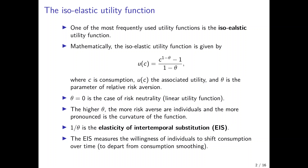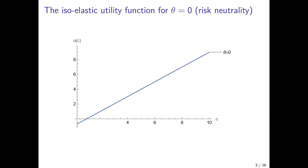I will explain the derivation and mathematical details later, but first I'd like to illustrate the utility function. Here you have the utility function plotted for the case of theta equal to 0 — risk neutrality — for an increasing consumption level. Consumption starts close to 0 and increases up to 10. For a very low consumption level utility would be negative, but as consumption increases above 1, we have a positive utility level, and utility increases linearly with consumption.